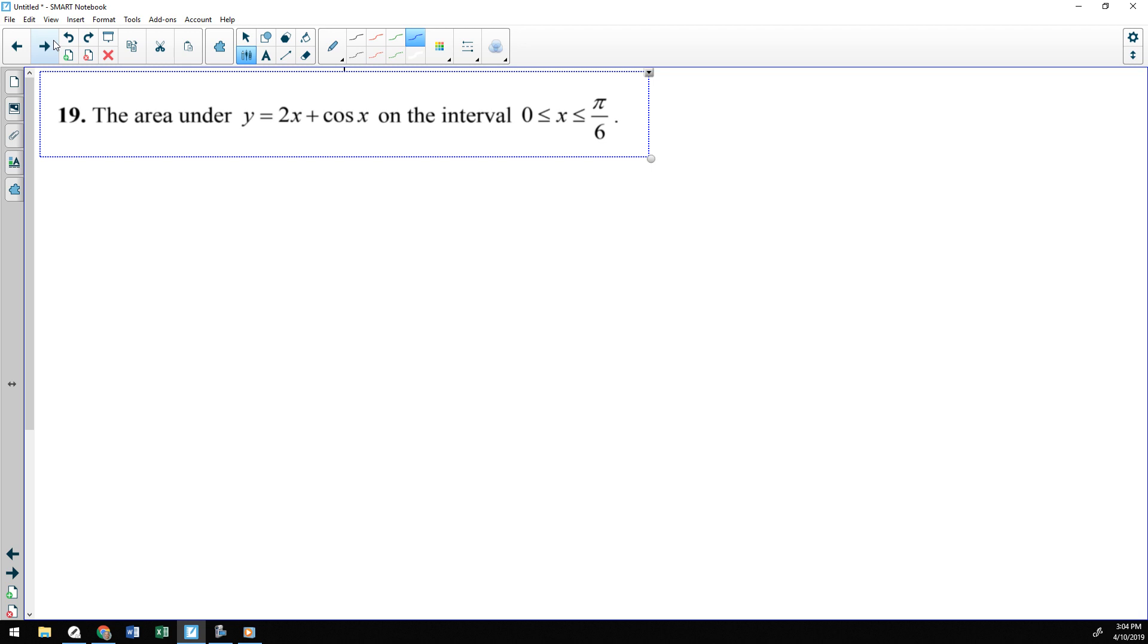And the last one, area under this function. So, again, we'll set this up with an antiderivative. Antiderivative of two x is x squared. Cosine is the derivative of sine, and then we'll evaluate this from zero to pi over six and plug in. So, we'll have pi over six squared plus the sine of pi over six.